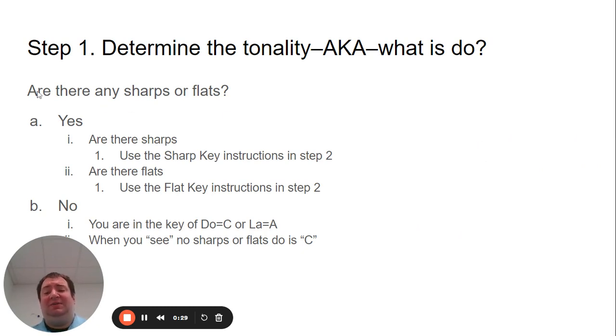If the answer is yes, there are sharps or yes, there are flats—it will never be both sharps and flats, either sharps or flats, never both—you move on to step two. If the answer is I don't see any sharps or flats, well, when you see no sharps or flats, do is C. So you've already figured out do and don't need to go to step two.